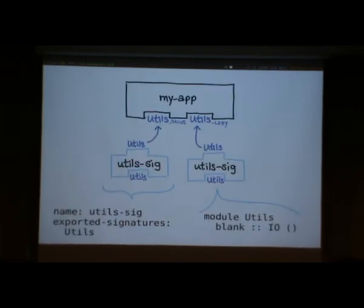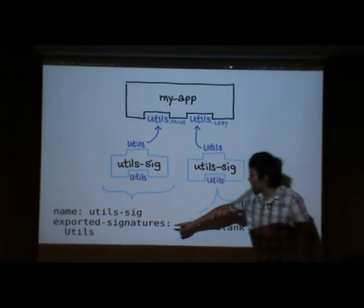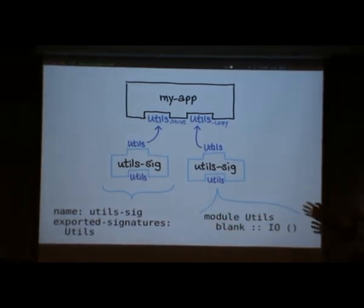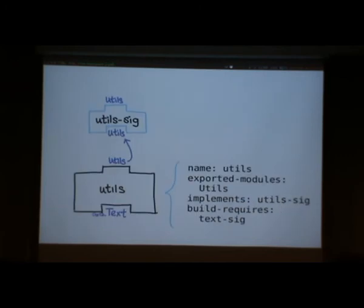Revisiting the earlier question: data.text in utils shouldn't be visible to clients of utils. That's the distinction made by exported signatures versus required signatures. You will always see a required signature because you can't just say 'I have a hole but I'm never going to implement it and you don't know about it.' So signatures aren't totally abstractable away, but you can still make sure people don't see the declarations you specify.